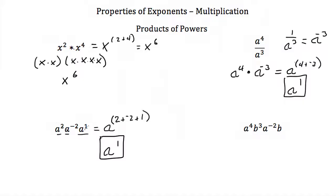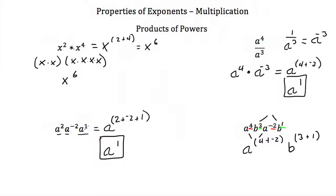Our last example: a to the fourth times b to the third times a to the minus 2 times b to the 1. We can only add terms with the same base, so we add exponents for our a's and separately add exponents for our b's. That gives us a to the 4 plus minus 2, times b to the 3 plus 1. Our answer is a squared times b to the fourth.